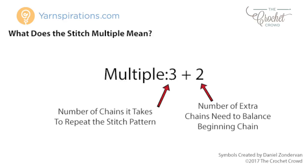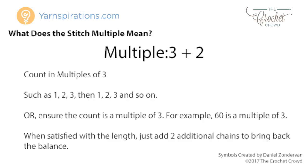The number two is the additional chains needed to keep balance of the chain — those are your gutters, otherwise known as the edges. So if you were to crochet this chain you would count 1, 2, 3 and keep repeating like that until you get to your desired length, and then at the end of the chain you're going to add your additional two chains in order to bring balance back to your chain.